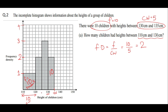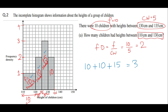Between 120 and 130, there are two bars — the interval is split at 125. From 120 to 125, class width is 5 and frequency density is 2, giving 10 students. From 125 to 130, class width is 5 and frequency density is 3, giving 15 students. So the total number of children between 110 and 130 cm is 10 plus 10 plus 15, which equals 35 children.